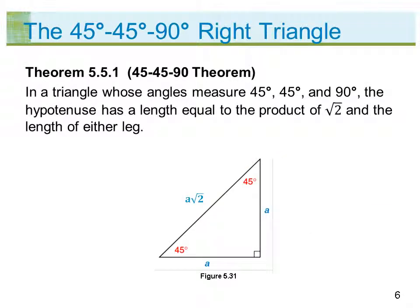Theorem 5.5.1 — 45-45-90 Theorem: In a triangle whose angles measure 45 degrees, 45 degrees, and 90 degrees, the hypotenuse has a length equal to the product of the square root of 2 and the length of either leg.